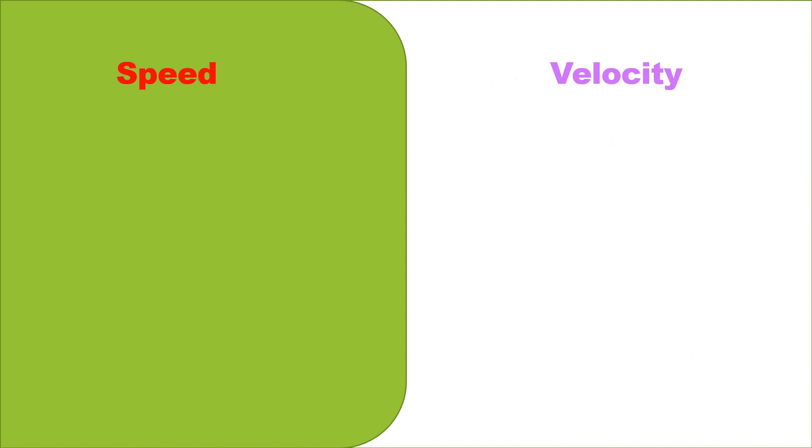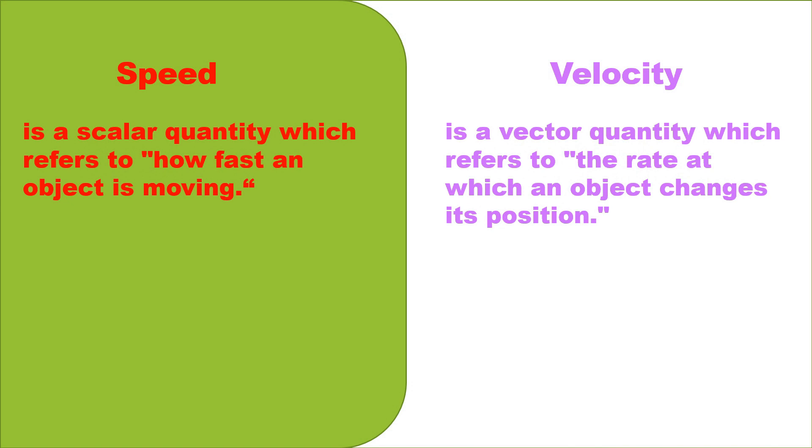Now let's compare speed and velocity. Speed is a scalar quantity which refers to how fast an object is moving. While velocity is a vector quantity which refers to the rate at which an object changes its position. These two quantities use the unit meters per second and the quantity time. But for velocity, we also add the direction.